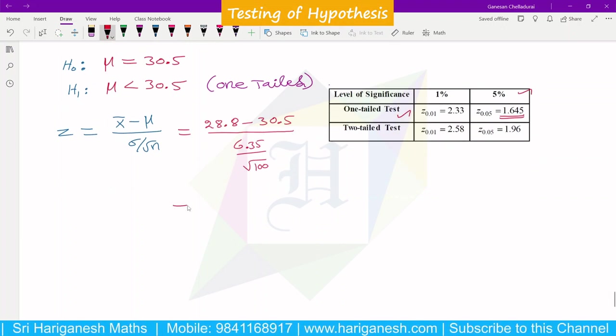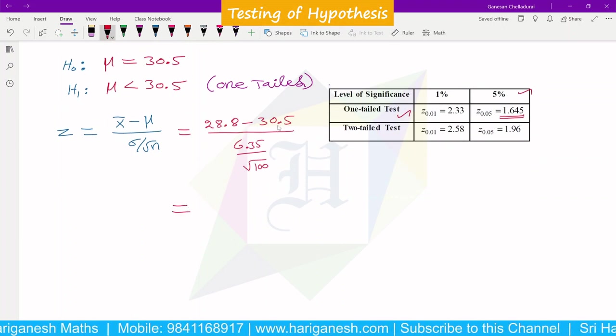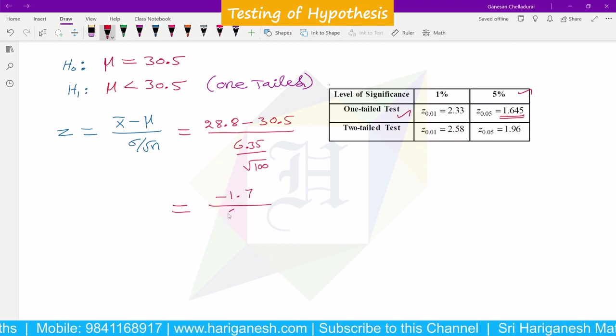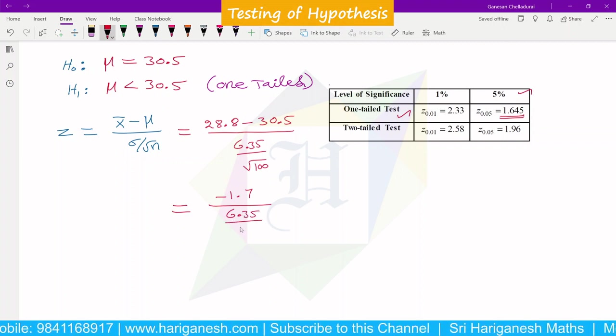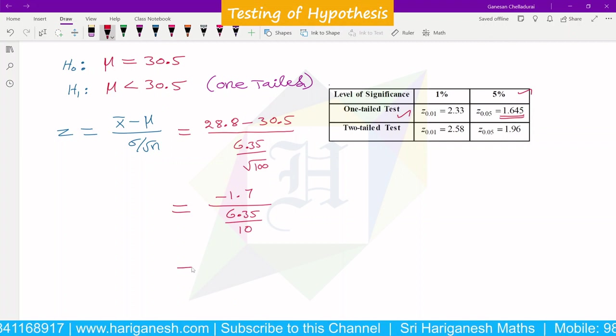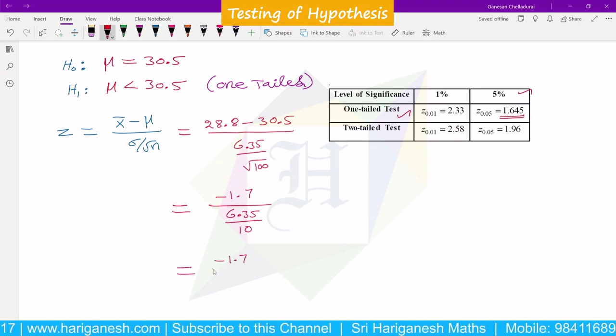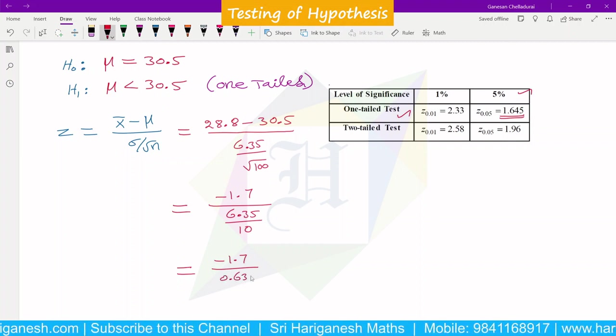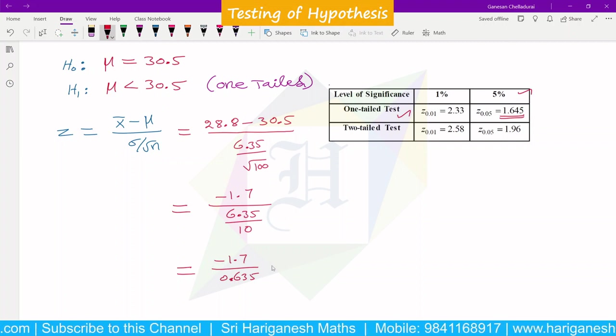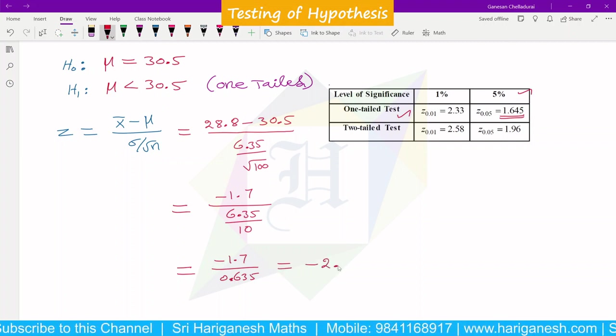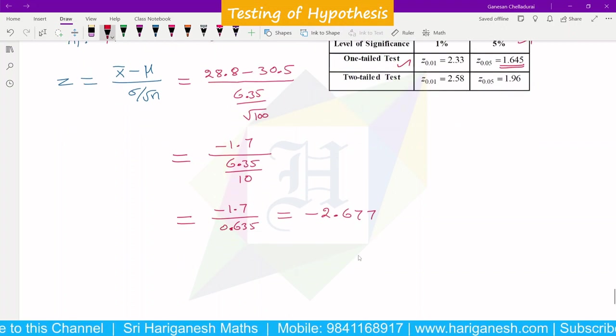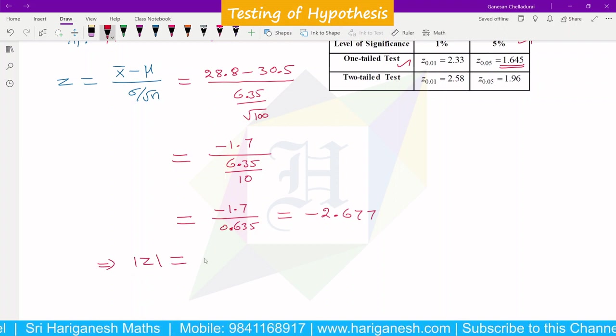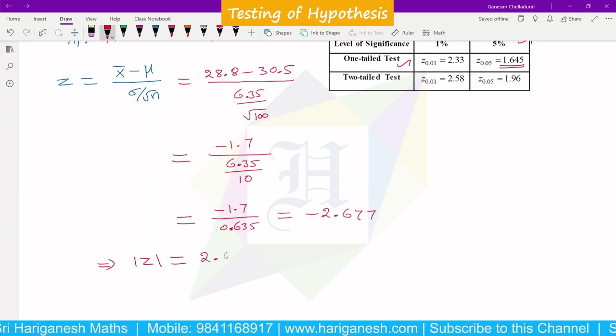Calculate z equals x bar minus mu divided by sigma over root n. That is 28.8 minus 30.5 divided by 6.35 divided by root 100, which is 10. So negative 1.5 divided by 0.635 equals negative 2.677. The modulus of z is 2.677.